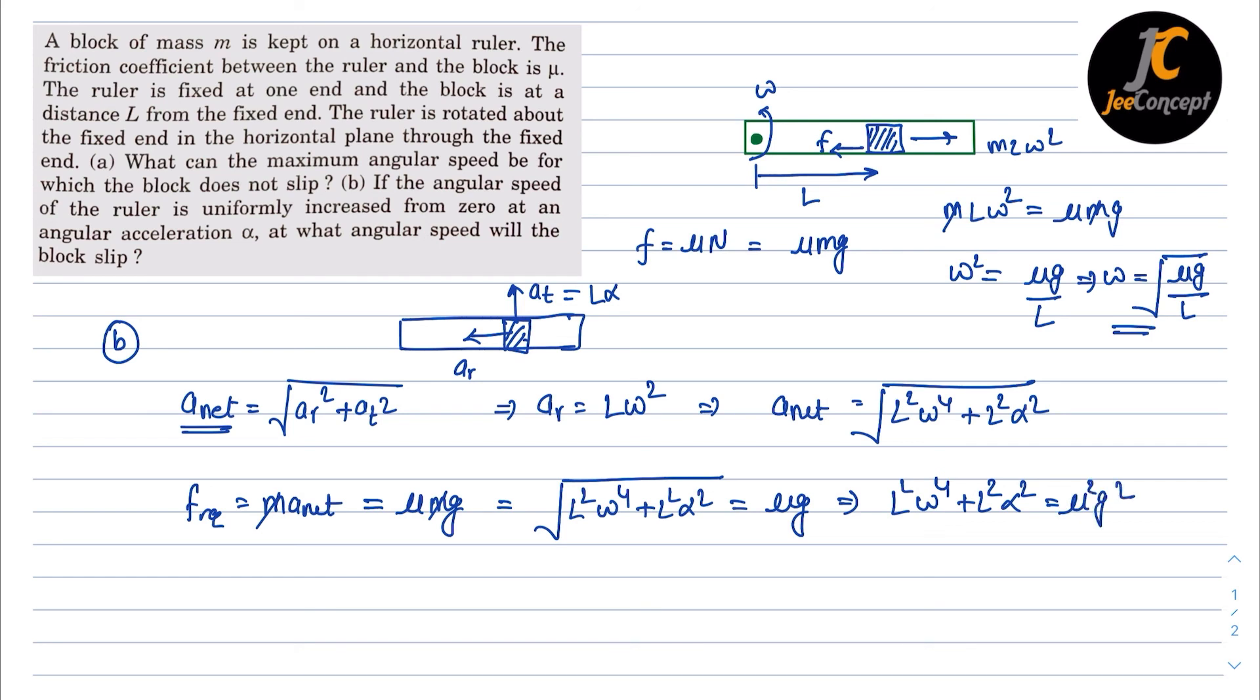If we solve that for omega, this will become mu square g square minus alpha square l square upon l square power 1 by 4. If we further simplify this one, this will become mu square g square upon l square minus alpha square power 1 by 4. So this is the solution of this problem.